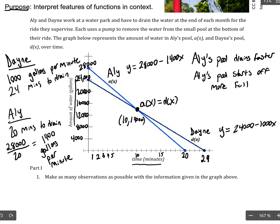But let's just verify that. So, we're really talking about solving the equation 28,000 minus 1,400X equals 24,000 minus 1,000X.